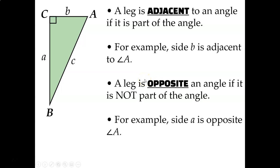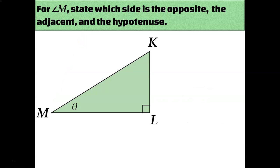Before we actually learn anything about sine, cosine, and tangent, let's practice identifying the opposite, adjacent, and hypotenuse given a certain angle. You'll see this symbol frequently in trigonometry — it's the variable we use to label an angle. It's the Greek letter theta, t-h-e-t-a. You can really just think about it like x, but for angles.